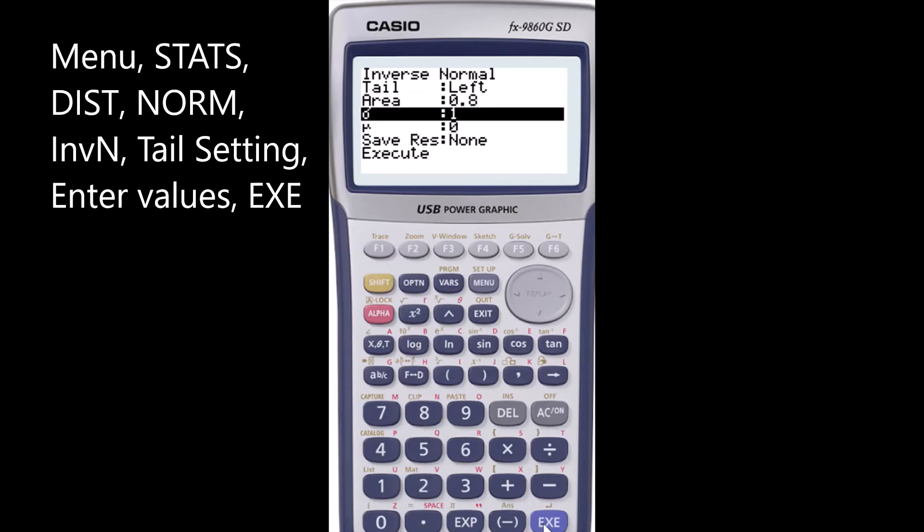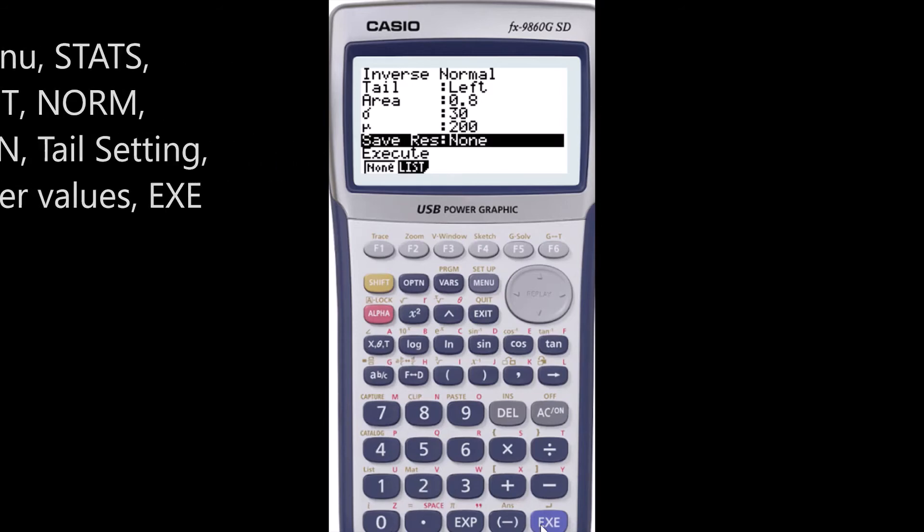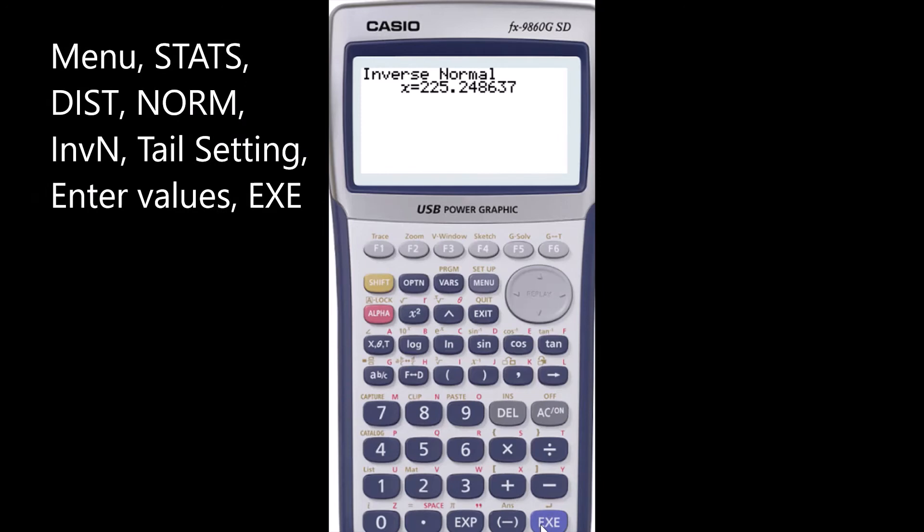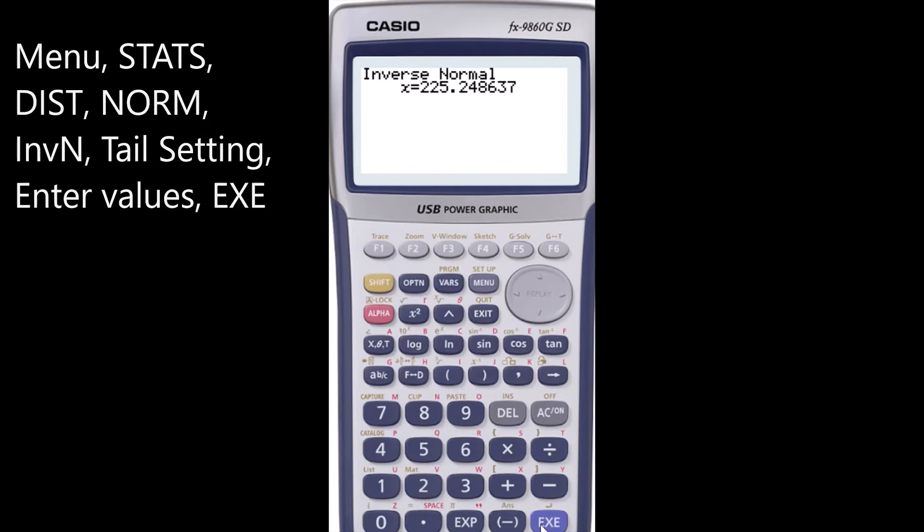The standard deviation that is given in the question was 30 and the mean value is 200, and then click execute. You'll get the cutoff time of 225.25 minutes.